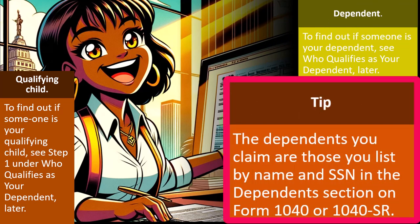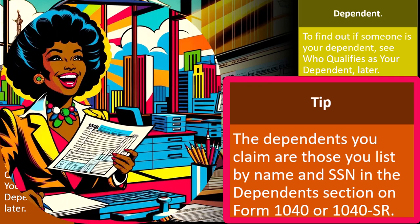A key tip: the dependents you claim are those you list by name and Social Security number in the dependents section on Form 1040 and 1040-SR. The general process is to put them on the first page of Form 1040 in the dependents area, listing names and Social Security numbers so the IRS can determine who they are.